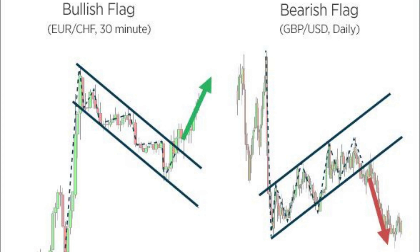Following the flagpole, there is a consolidation period where the price forms a rectangular shaped flag. This flag is characterized by a series of lower highs and lower lows. Once the consolidation phase is complete, the price tends to break out of the flag pattern and resume the upward trend. Ideally, the volume should decrease during the consolidation phase and increase during the breakout, confirming the pattern.